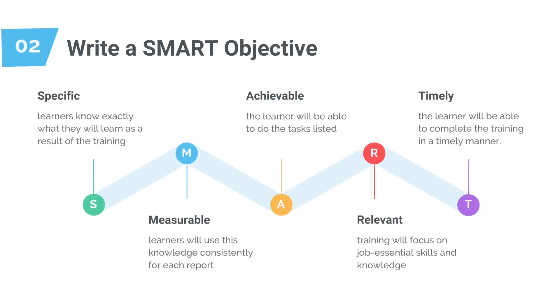Next, write a training goal or objective. For the best results, think SMART, which stands for Specific, Measurable, Achievable, Relevant, and Timely.